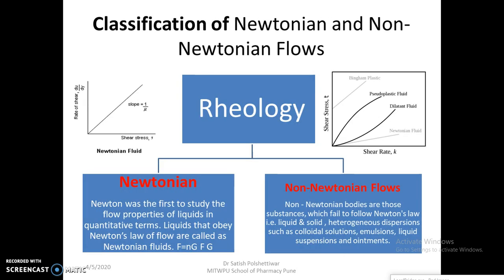We must understand the classification of Newtonian and non-Newtonian flow. Newton was the first to study the flow properties of liquids in quantitative terms, which is why it is called Newtonian flow. Liquids that obey Newton's law of flow are called Newtonian fluids, denoted by the formula F = η·G, where F is shearing stress, η is viscosity, and G is the rate of shear.